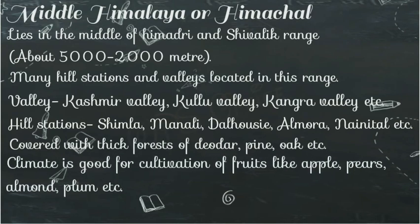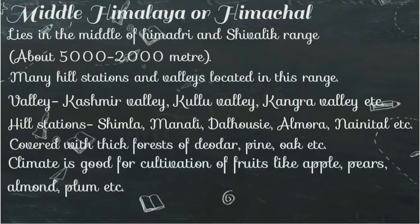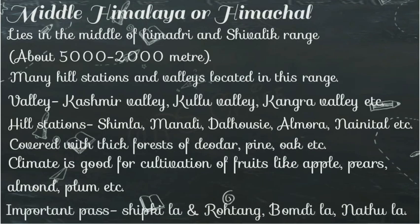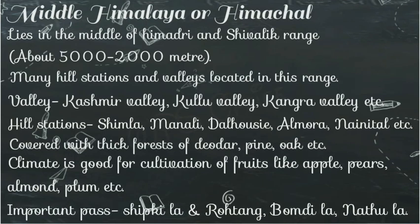Climate is good for cultivation of fruits like apples, pears, almonds, plum, etc। हिमाचल की जलवायु यहाँ फलों को उपजाने के लिए बहुत उत्तम है — सेब, नाशपाती, बादाम, और plum के बागान बहुत अच्छे से हैं। Important pass — a route through a mountain range — हिमाचल रेंज में important passes हैं: Shipkila और Rohtang जो हिमाचल प्रदेश में है, Bumdila जो अरुणाचल प्रदेश में है, और Nathula जो सिक्किम में है।